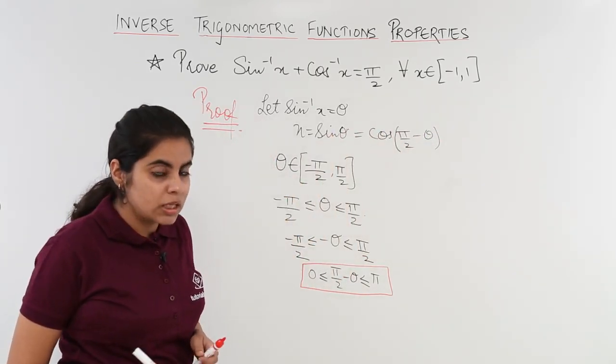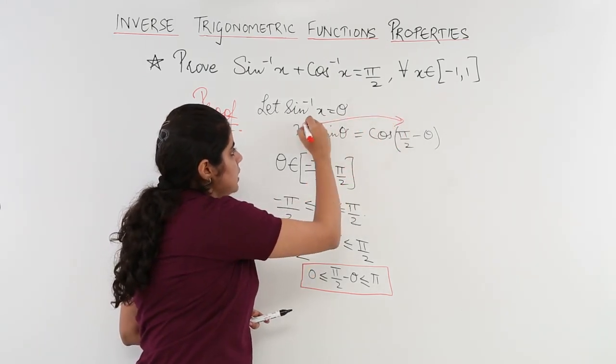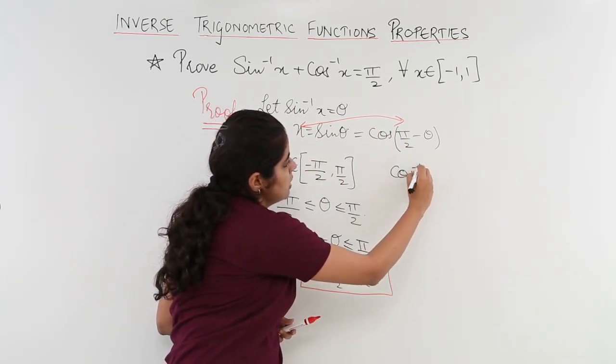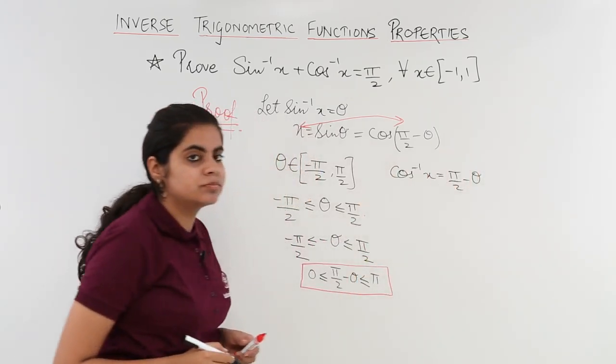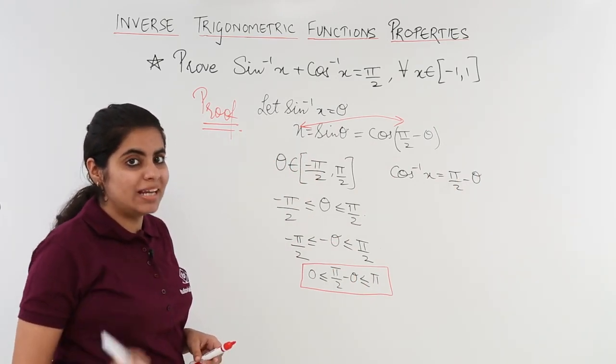Now taking x and cos 90 minus theta what do I have? I have cos inverse of x is equal to pi by 2 minus theta. Now cos inverse of x is equal to pi by 2 minus theta.